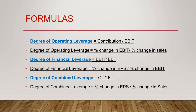Then we looked at the Degree of Combined Leverage (DCL), which is the product of Operating Leverage and Financial Leverage. There is also the formula: percentage change in EPS divided by percentage change in sales. As you can see, it is a combination of both operating and financial leverage, giving an overall picture of the business in terms of its leveraged position. Whatever change is happening in sales that impacts EPS and share price — that is the Degree of Combined Leverage.